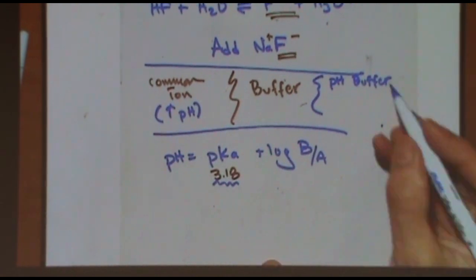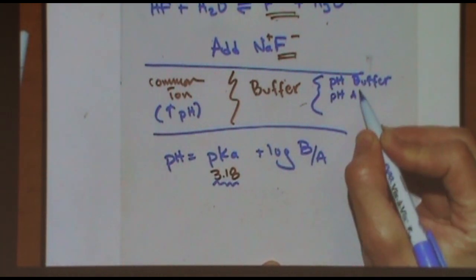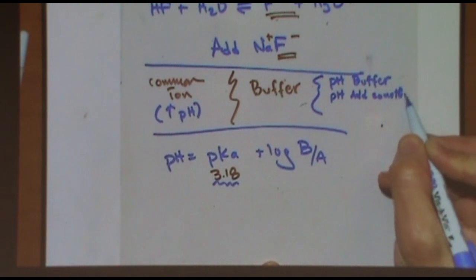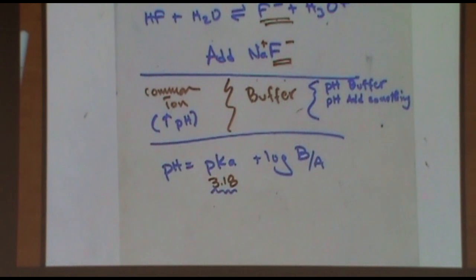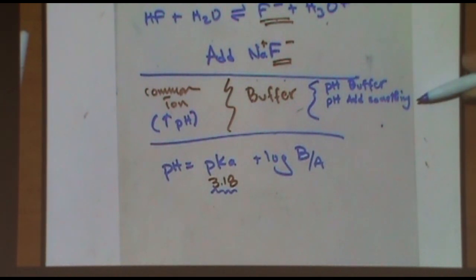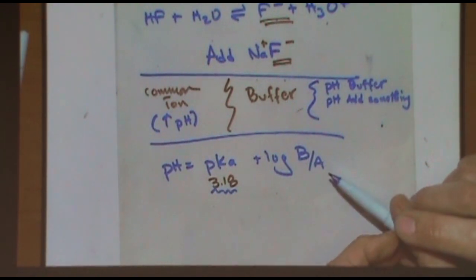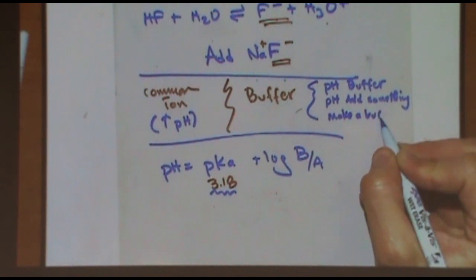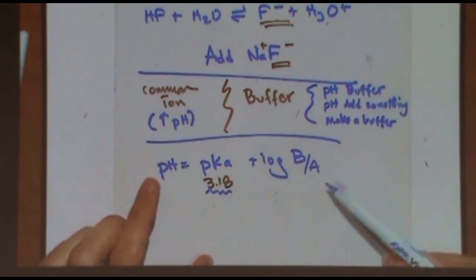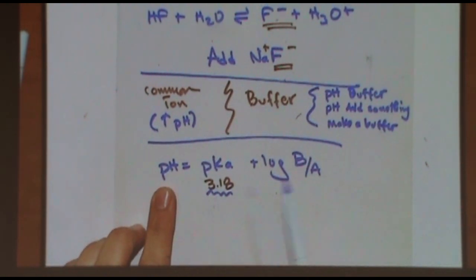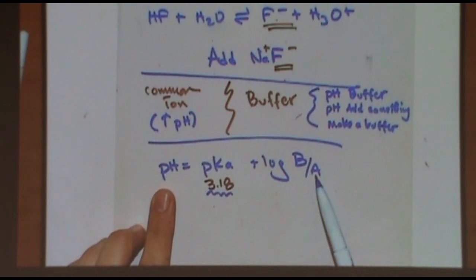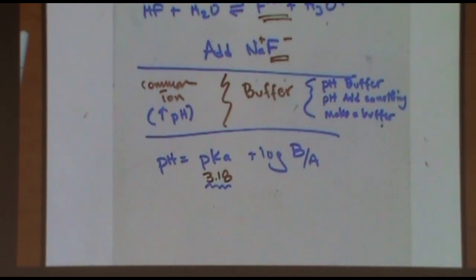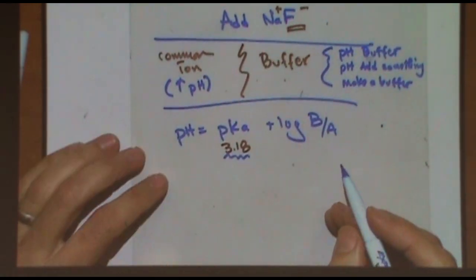Beyond that range it may exceed its buffer capacity. If you add something to the buffer, it becomes a two-part problem: part one is stoichiometry, and part two is Henderson-Hasselbalch. If it's just a buffer with no addition, you only use Henderson-Hasselbalch. The stoichiometry tells you the new concentrations of base and acid. A variation is making a buffer: pH is given and you work backwards using Henderson-Hasselbalch to find the base or acid concentration.